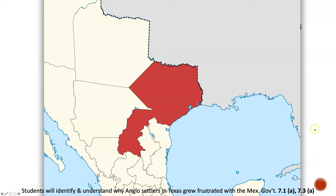This is a map of Coahuila y Tejas. You'll recognize this portion of Texas — it pretty much looks like east and north-central Texas — but you'll notice it doesn't have that normal Texas star shape with El Paso out here, and the Rio Grande flows down here. The southern border of Texas at the time of Coahuila y Tejas was actually the Nueces River, which is going to come into play in the next unit when we talk about the border between Texas and Mexico. Texas looked much different when settlers were coming from the United States.